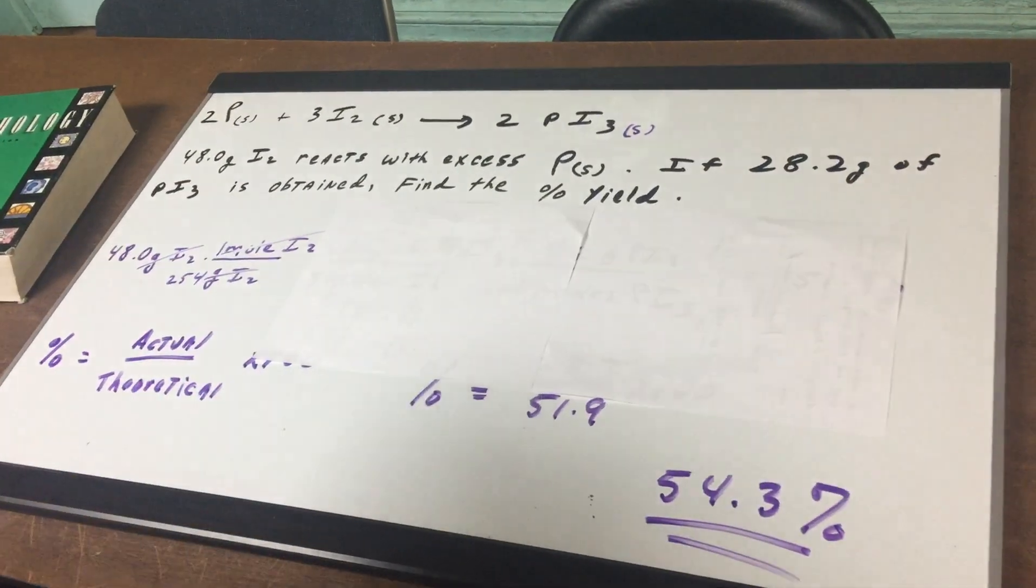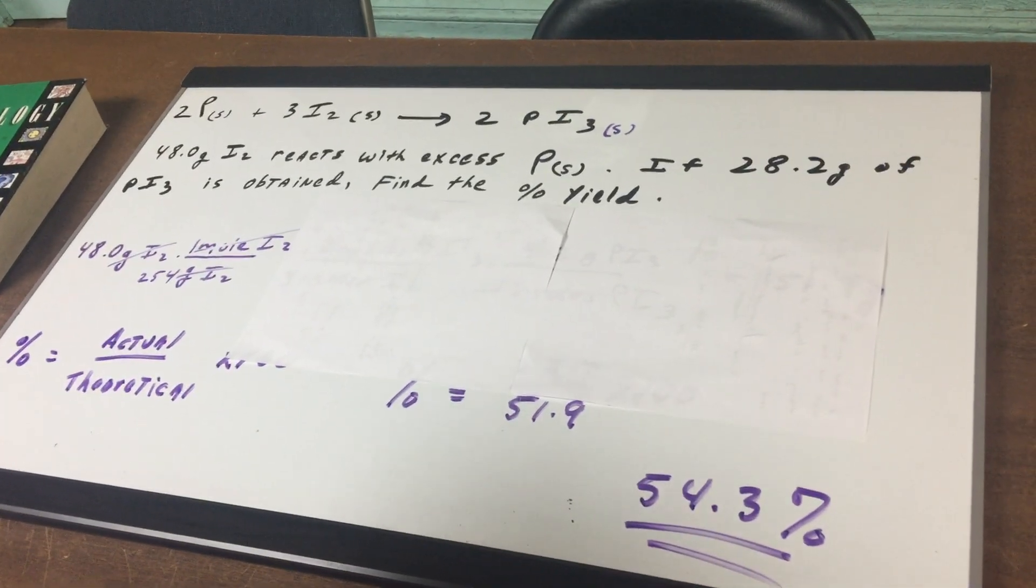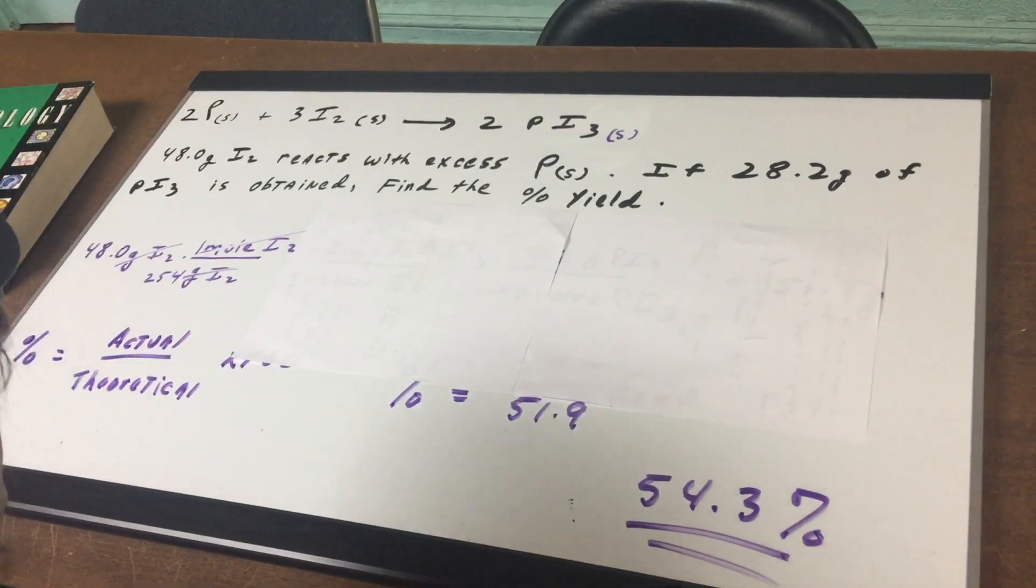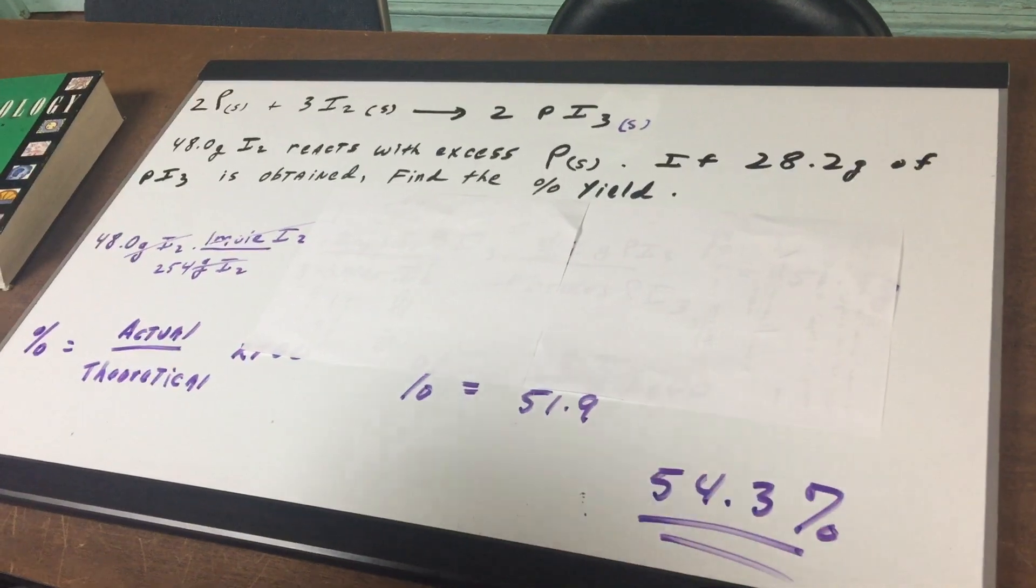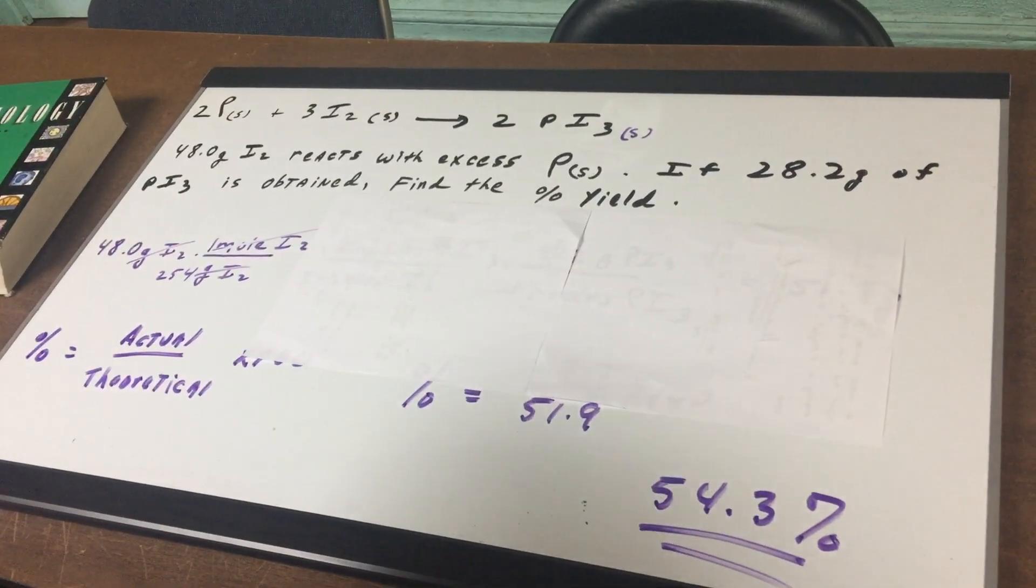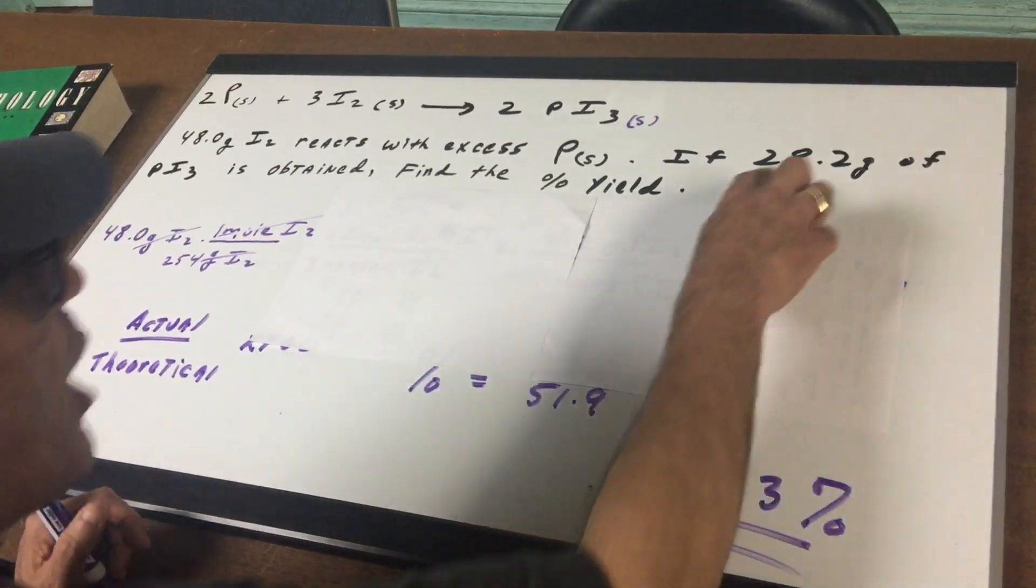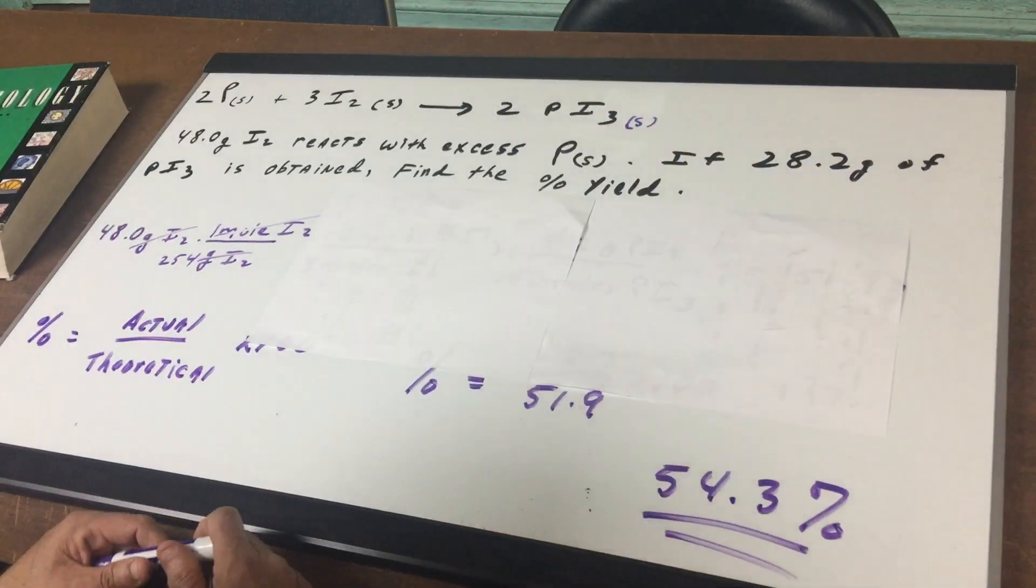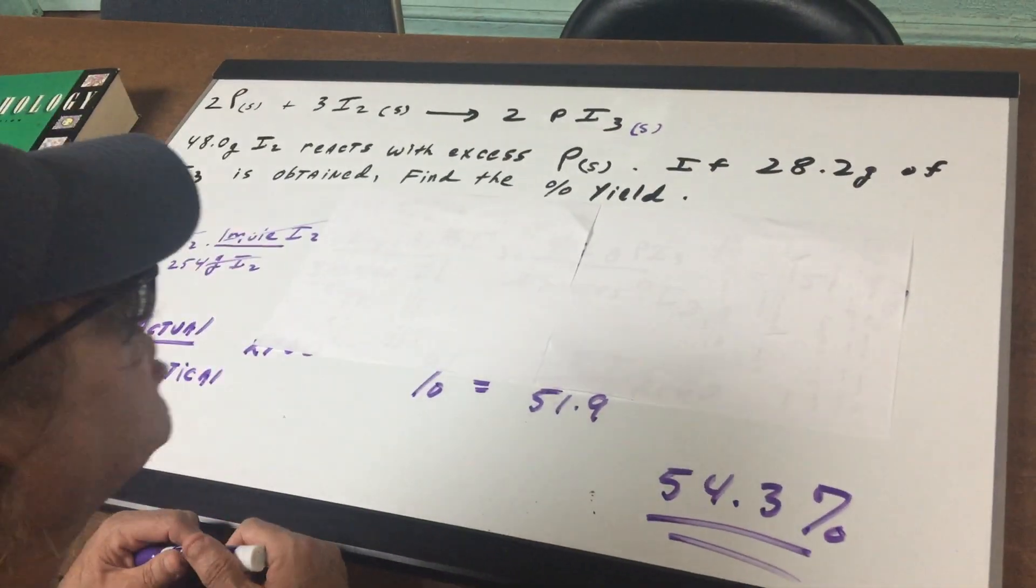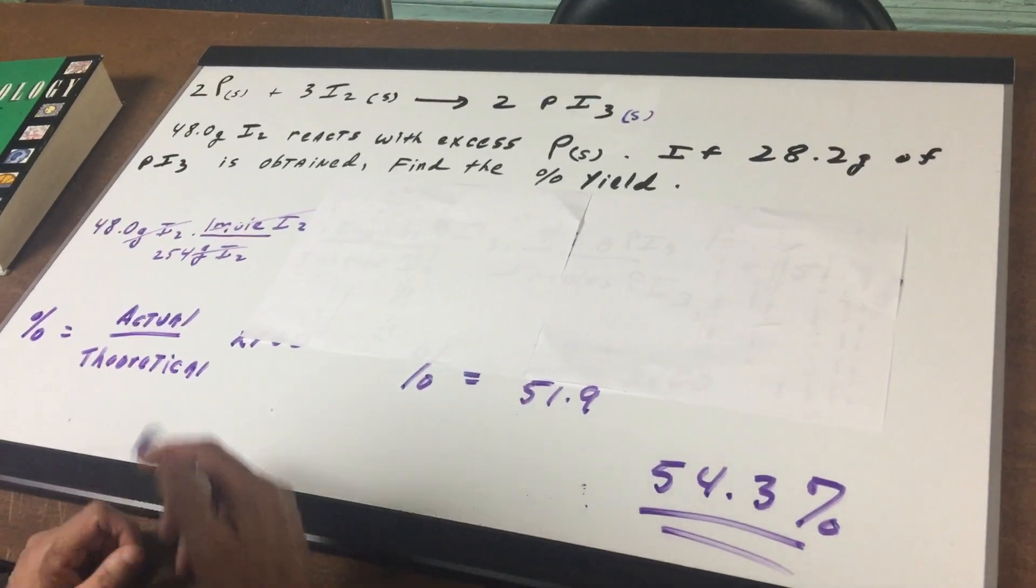I say that there's 48 grams of iodine reacting with excess phosphorus. If 28.2 grams of the PI₃, that is phosphorus triiodide, is obtained, find the percent yield. We all know this is the actual amount. So the actual amount was 28.2 and what we got to do is we got to get the theoretical yield.